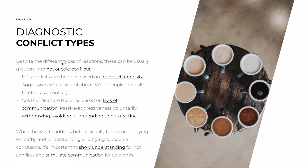Despite the different types of reactions, these can usually be grouped, in a very broad sense, into hot or cold conflicts. Hot conflicts are the ones based on too much intensity — aggressiveness, insults, verbal abuse. It's what you probably think of when you think of a conflict. Cold conflicts are the ones based on lack of communication — passive-aggressiveness, voluntarily withdrawing, avoiding the topic, even becoming delusional and ignoring the facts, or pretending that everything is fine. All fit this pattern.